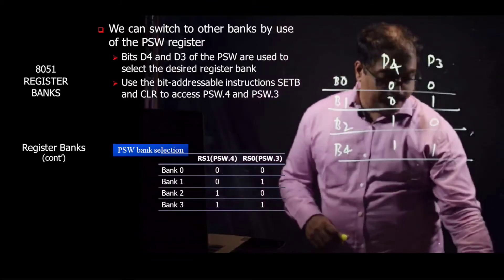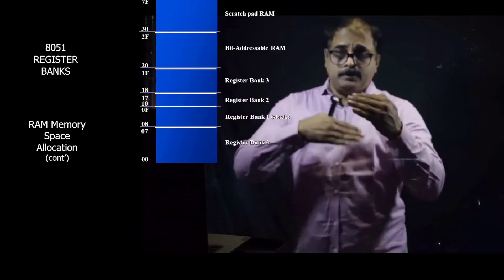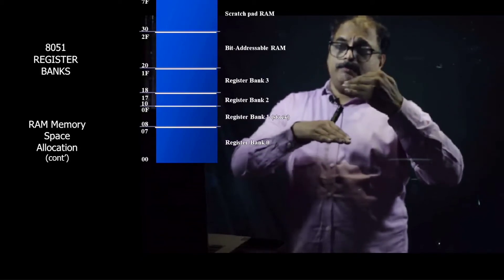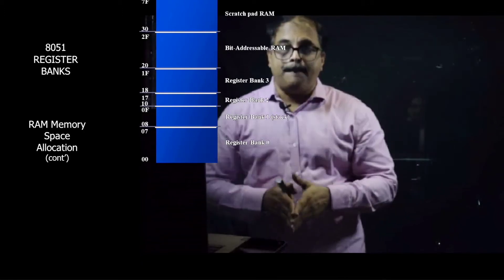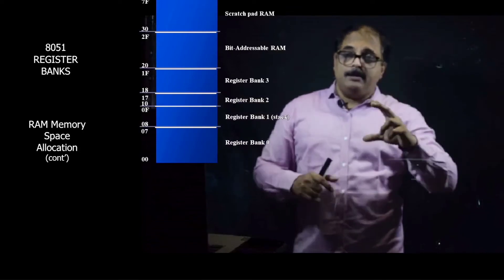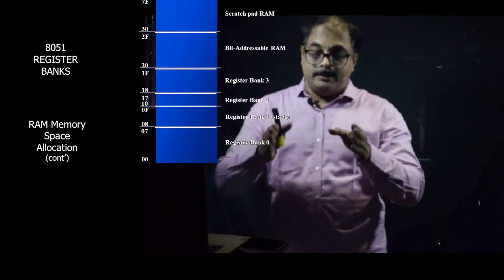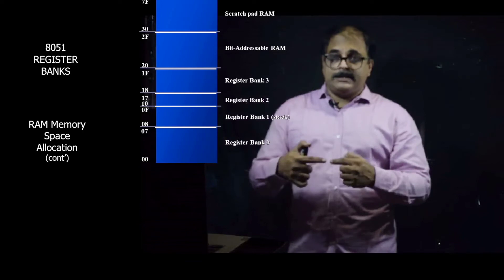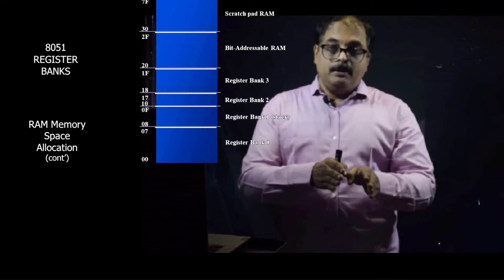This is about your first 32 registers. After 32, that means you go from 20 to 2F, these registers are bit addressable RAM. This particular area from 20 to 2F is called as bit addressable RAM. Whenever you access RAM it can be bit addressable or it can be byte addressable.